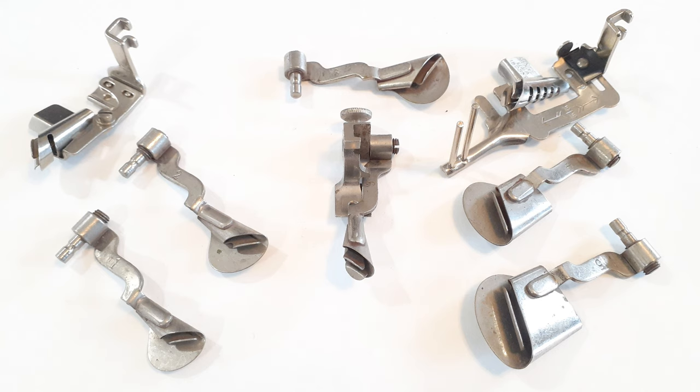To use the ruffler, you simply draw the material slightly to the back of the needle, lower the presser bar and proceed to sew. To make a finer gather, you shorten the stroke of the ruffling blade by backing out the regulating screw and shorten your stitch length. To make a fuller gather, you do the opposite, driving in the screw and increasing your stitch length.